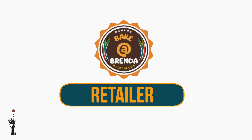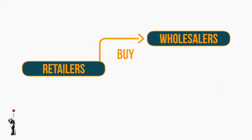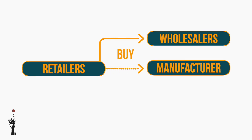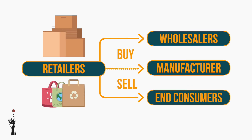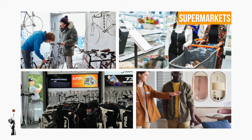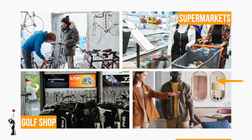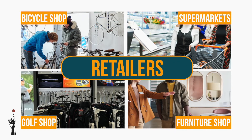Brenda is an example of a retailer. Retailers mostly buy their products from wholesalers, but also sometimes directly from the manufacturer. They buy in fairly large quantities so that they can sell back to end consumers in smaller quantities. Supermarkets, specialist shops like golf shops, furniture shops, etc., are all examples of retailers.